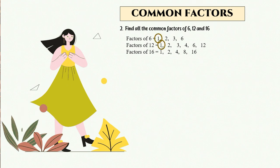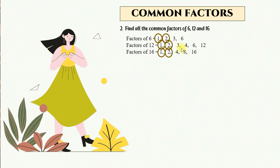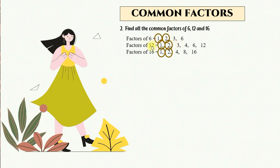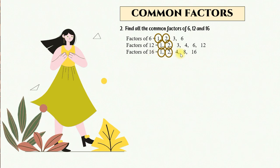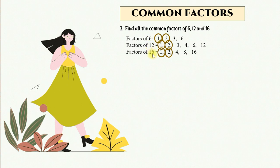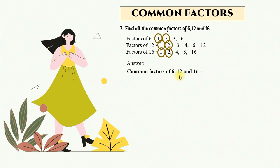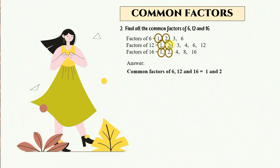From here, we circle the same numbers. Remember: even though 3 is a factor of 6 and a factor of 12, 3 is not a factor of 16. So 3 is not a common factor of 6, 12, and 16. We only circle the number which appears in all three factor lists. So, the common factors of 6, 12, and 16 are 1 and 2.